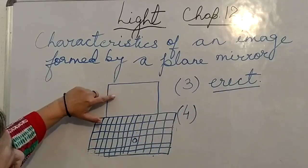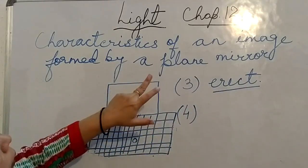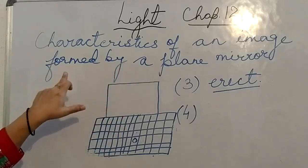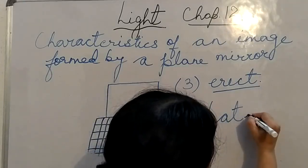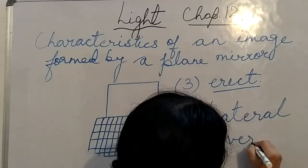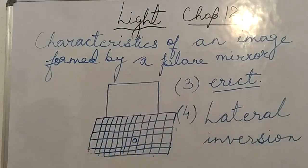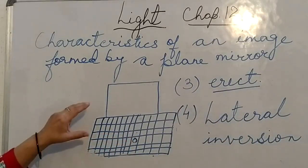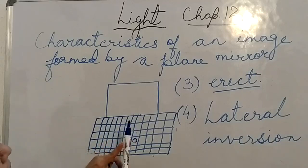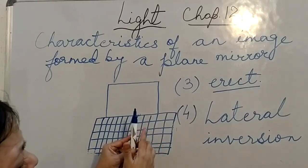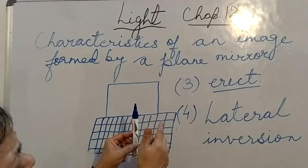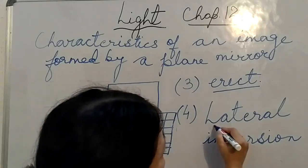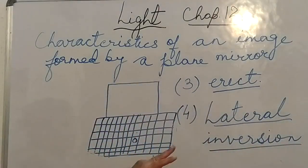An interesting phenomenon takes place in the formation of an image by a plane mirror, and that is lateral inversion. Lateral inversion means that the right side of the object appears to be the left side in the image, and the left side of the object appears to be the right side in the image. This phenomenon is known as lateral inversion, and it takes place in case of a plane mirror.